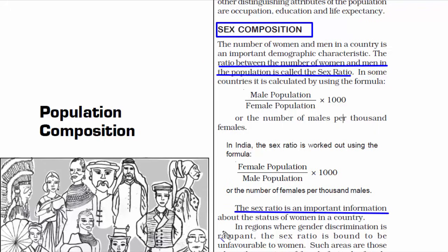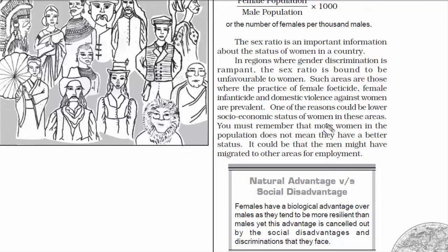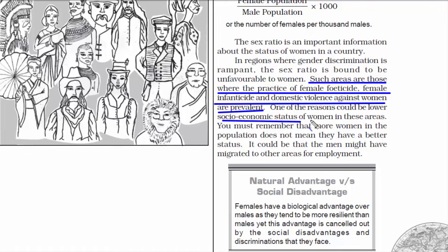The sex ratio is an important indicator of the status of women in a country. Places where the sex ratio is not in favor of women are those where the practice of female feticide, female infanticide, and domestic violence against women is common. These problems are outcomes of the low socioeconomic status of women, meaning women in these places have not been empowered enough to stand up for their rights.